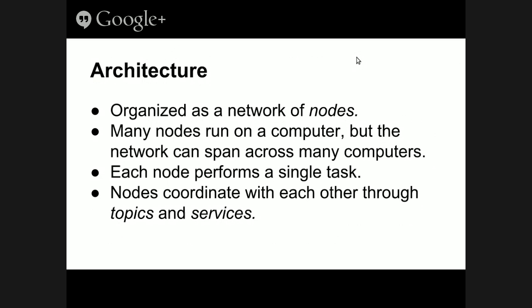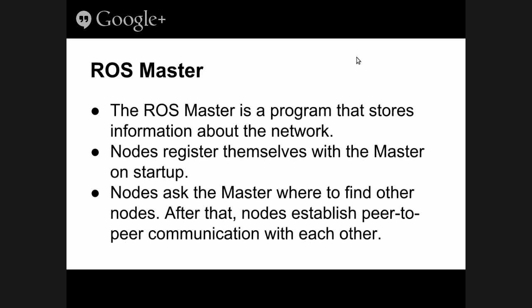The abstractions that ROS offers for getting nodes to talk to each other are topics and services — those are the two things we're going to be talking about today. One important thing to know about is the ROS master, which is a special entity in ROS that basically stores information about the network and all the nodes.